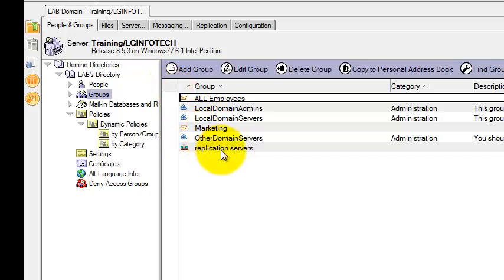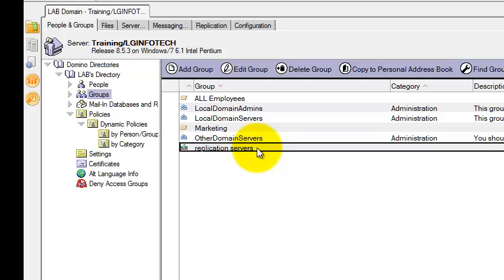So these are the servers I have created. Then save and close. These servers you can use for the replication purpose. This type of server group can start replicating with a group of servers using a connection document. In the next video I am going to show you how to create a connection document and add this group name there. Thank you.